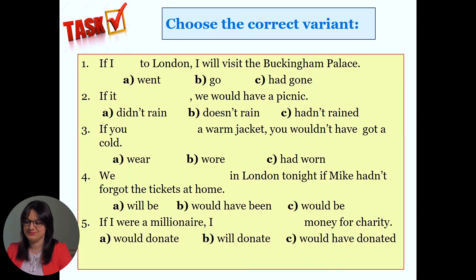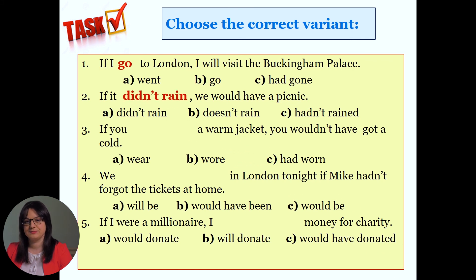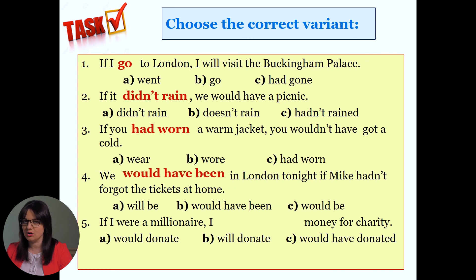The next exercise: complete the sentences by choosing the correct variant. Number 1: 'If I go to London, I will visit Buckingham Palace.' Number 2: 'If it didn't rain, we would have a picnic.' Number 3: 'If you had worn a warm jacket, you wouldn't have got a cold.' Number 4: 'We would have been in London tonight if Mike hadn't forgotten the tickets at home.' Number 5: 'If I were a millionaire, I would donate money for charity.'